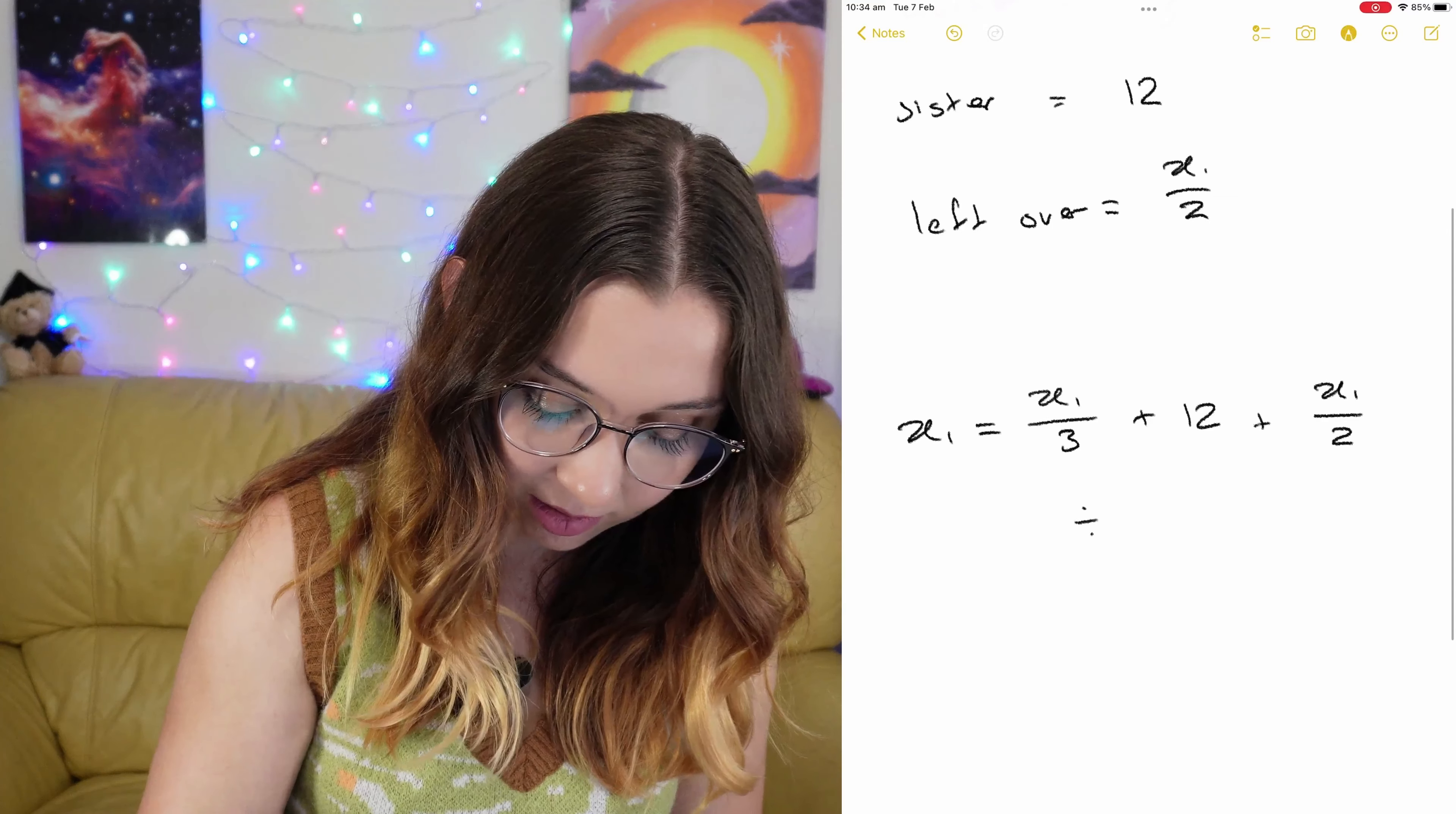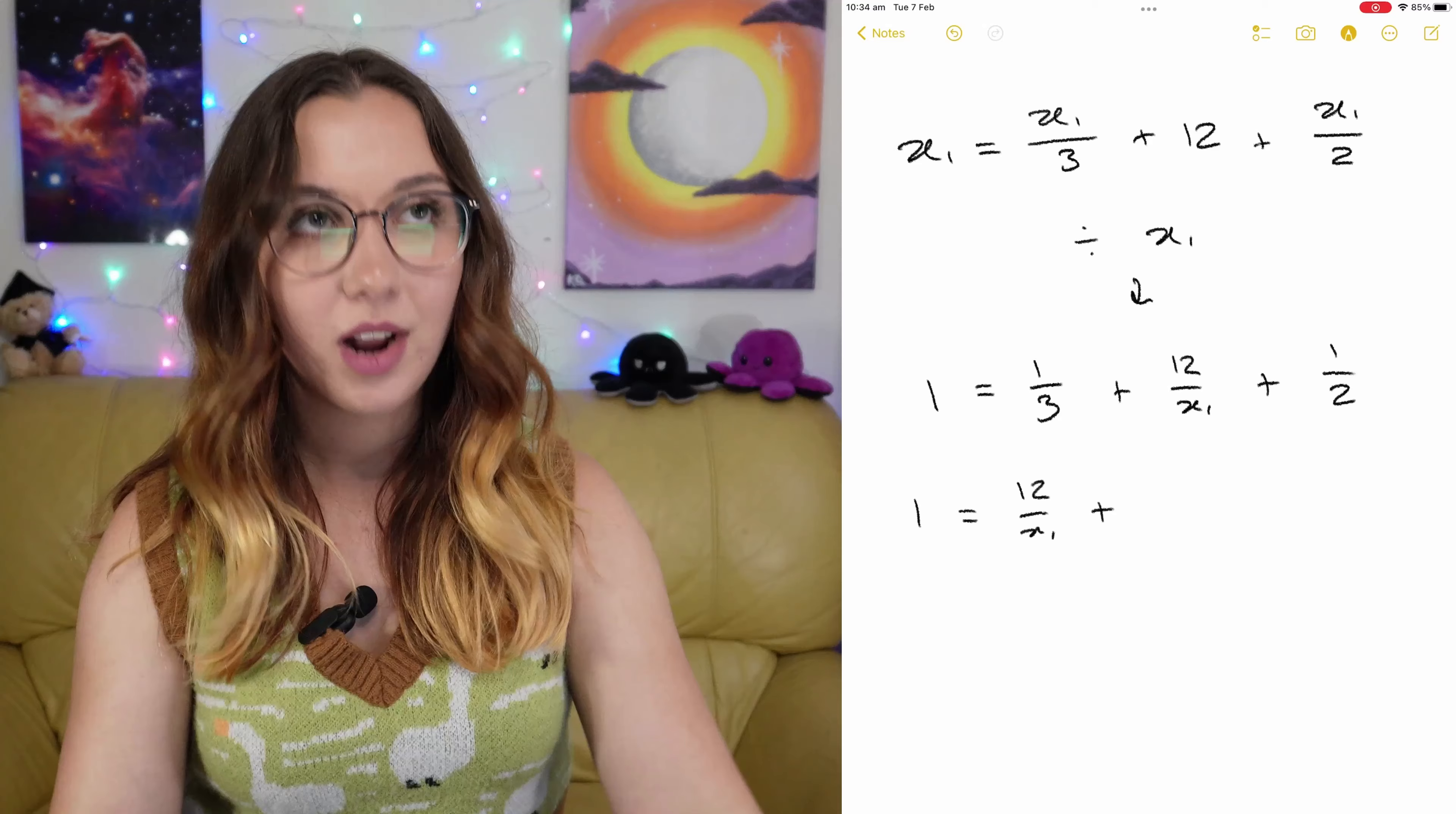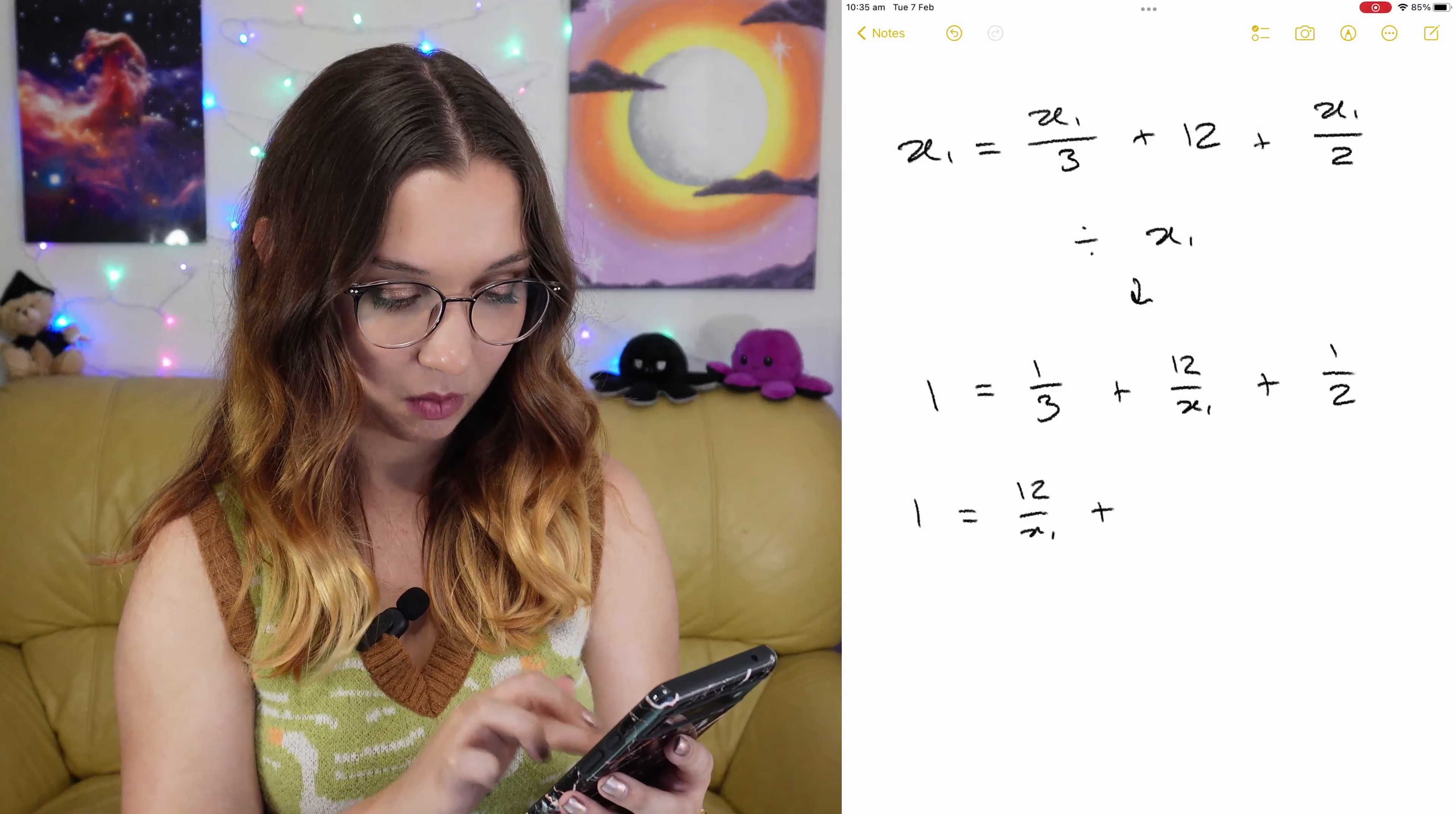So that gets us to 1, because x1 divided by x1 is just 1, equals 1 over 3 plus 12 divided by x1 plus 1 over 2. I'm going to make 1 over 3 and 1 over 2 a single fraction. I'll just use a calculator. 1 divided by 3 plus 1 divided by 2. 5 on 6. That makes sense.